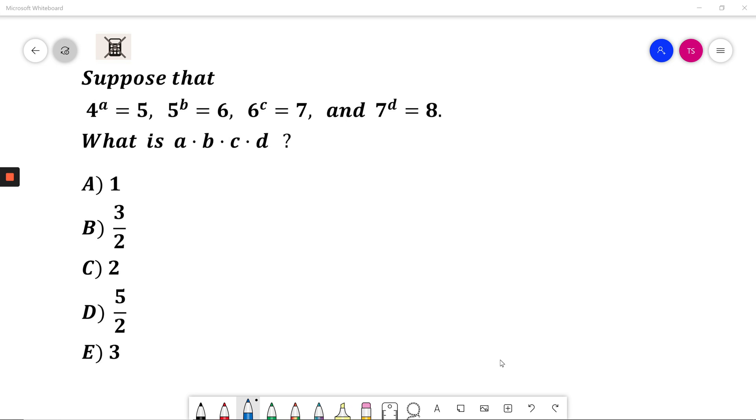I can solve this question this way. I know that 7 to power of D is 8. I also know that 7 is equal to 6 to power of C. I will substitute that. So in place of 7 I'm putting 6 to power of C to power of D is equal to 8.